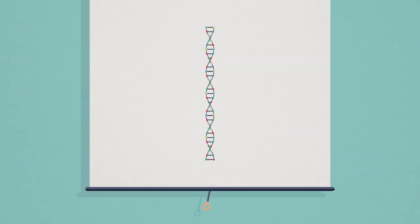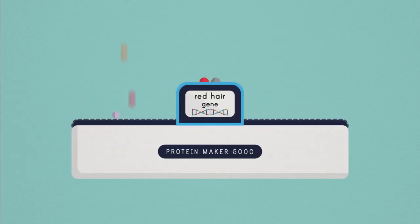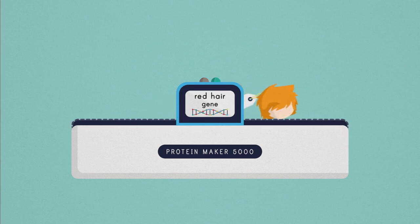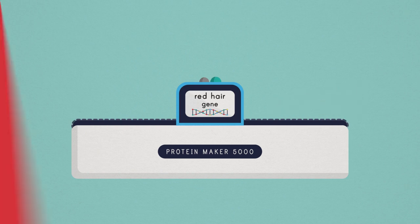If we unwind a chromosome, we can identify genes. Genes are the basic building blocks that make proteins. Genes are like the blueprint to make a machine, and proteins are like the individual components of that machine. Proteins make us who we are and help us grow and function properly.